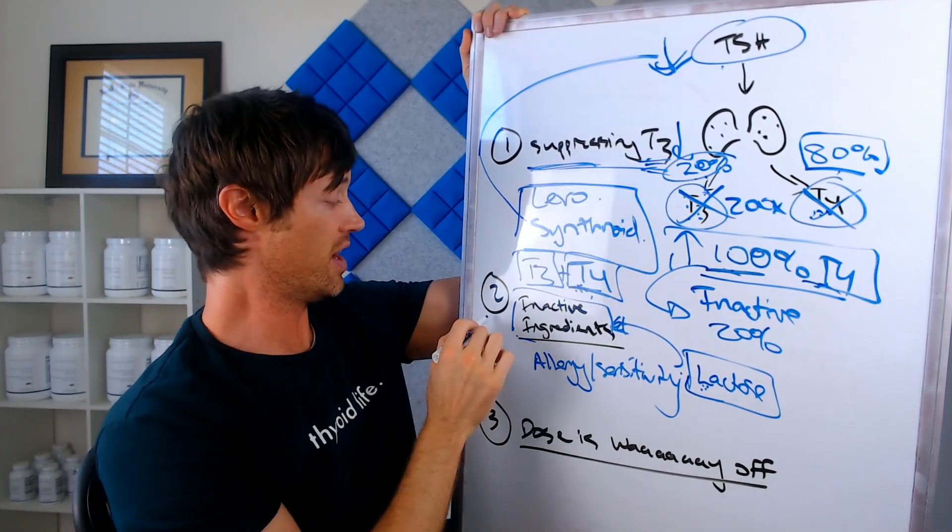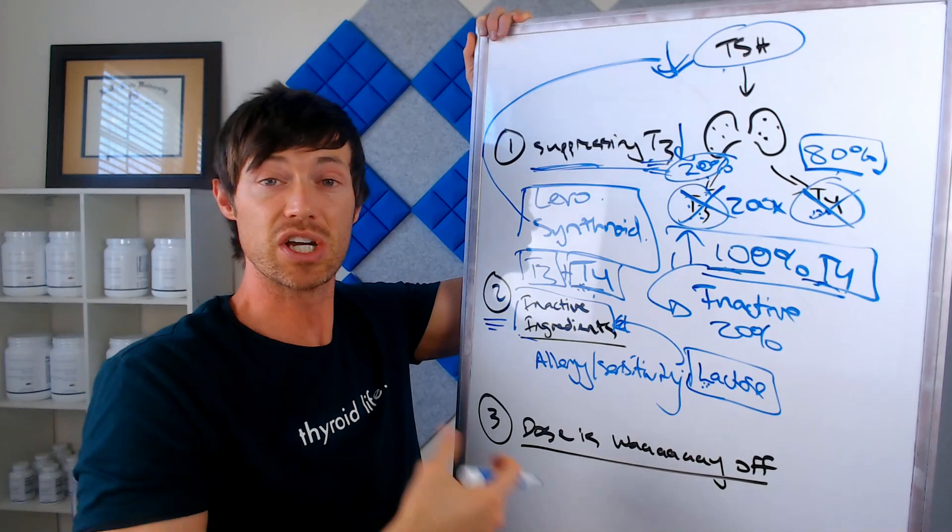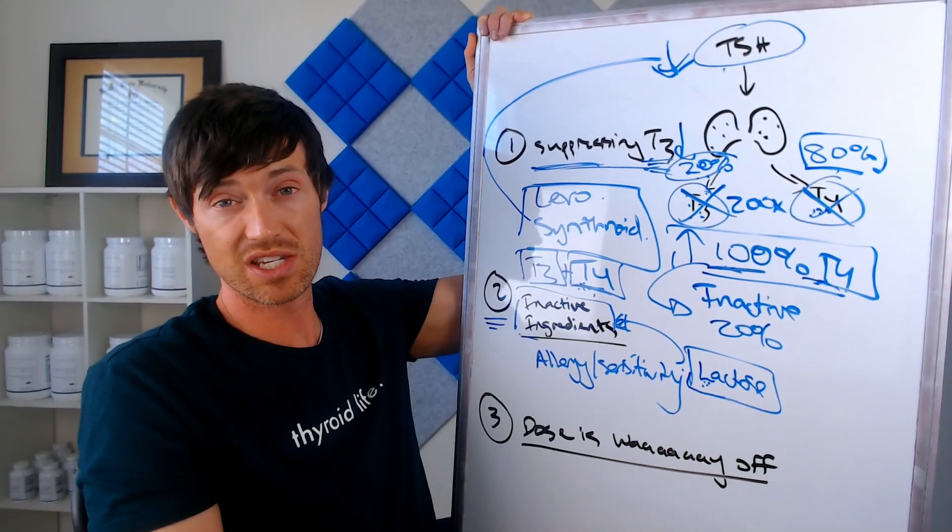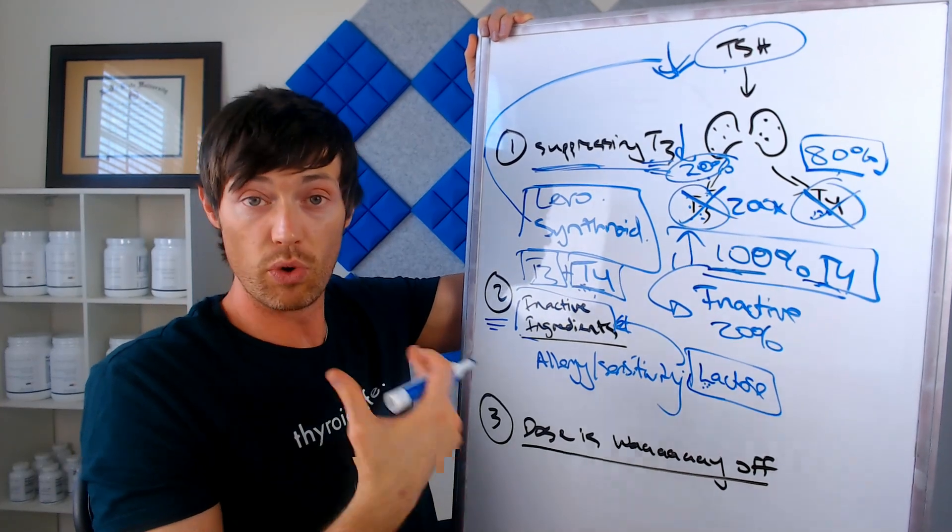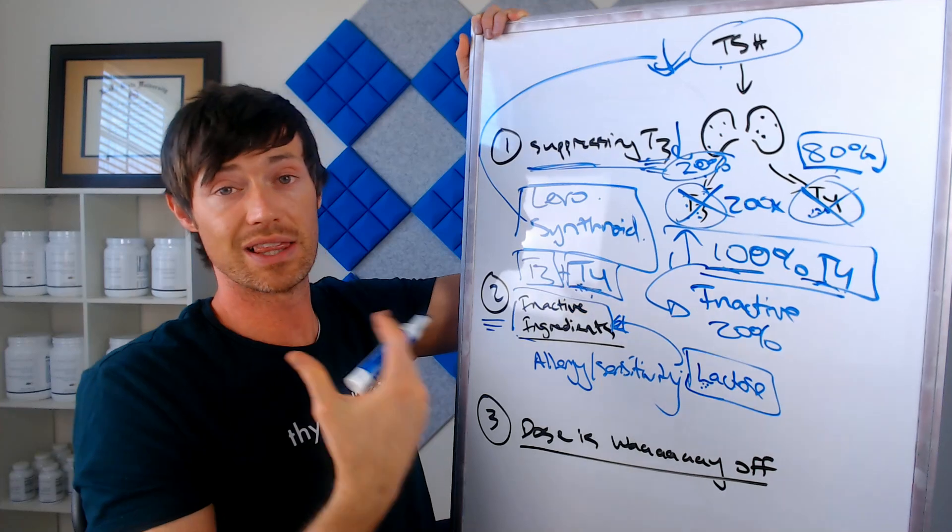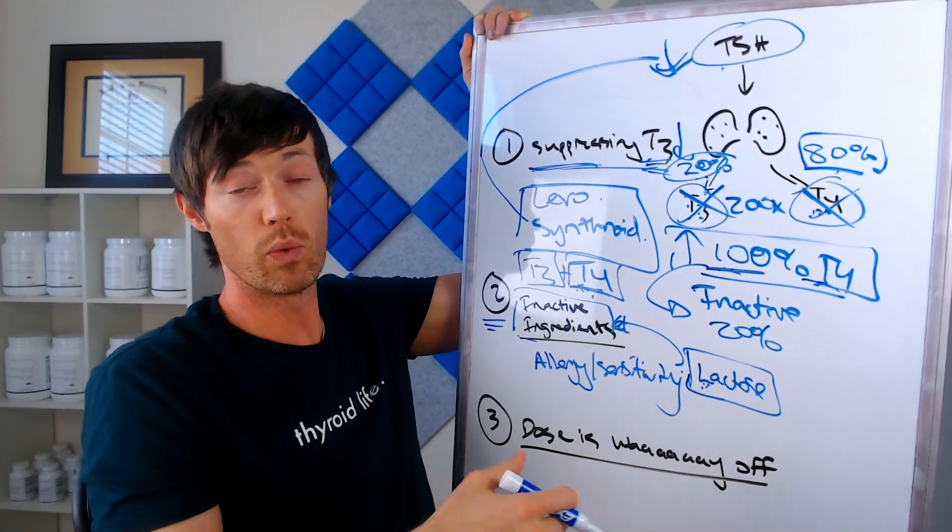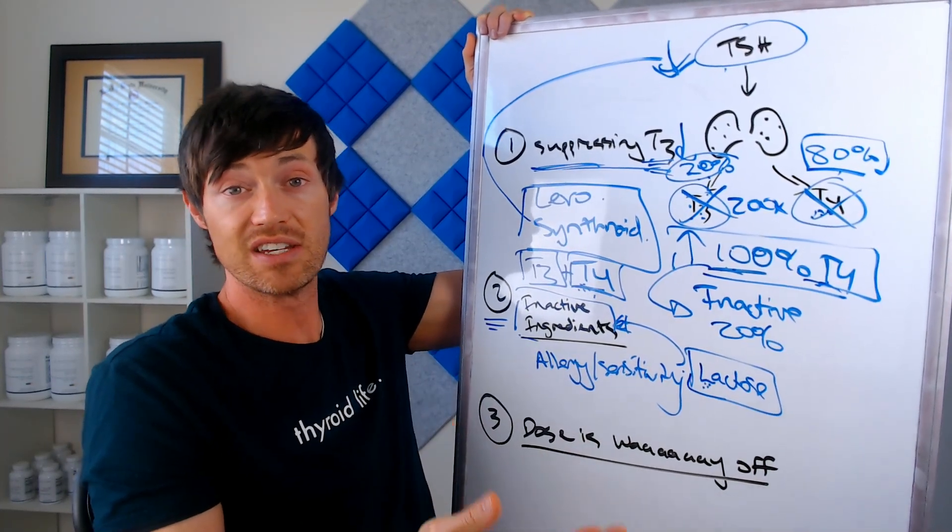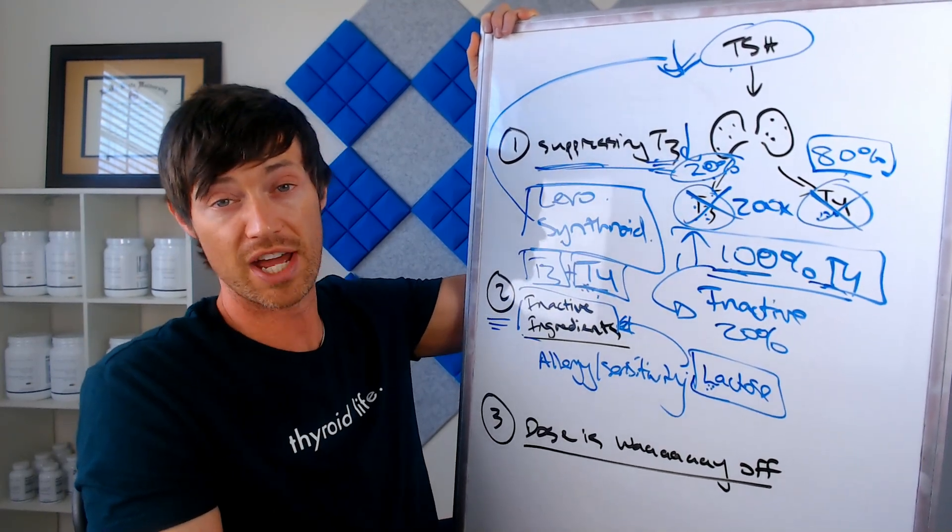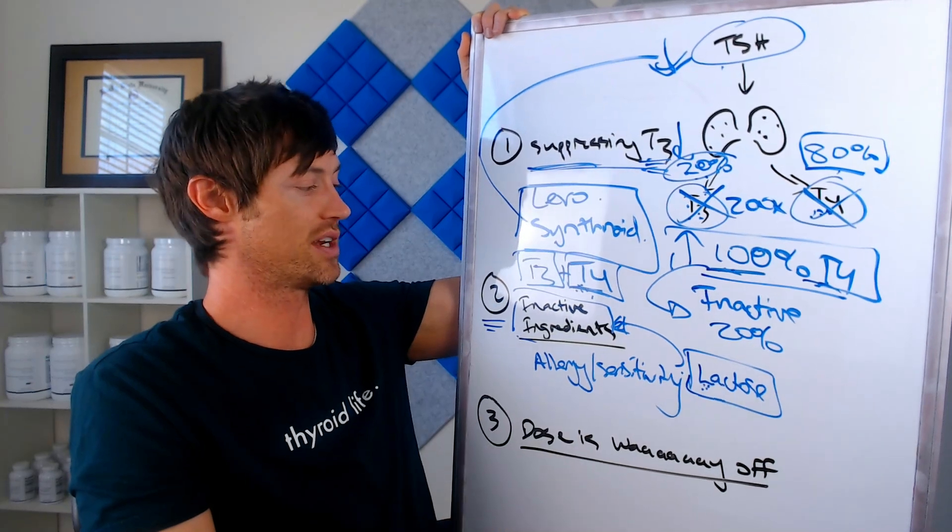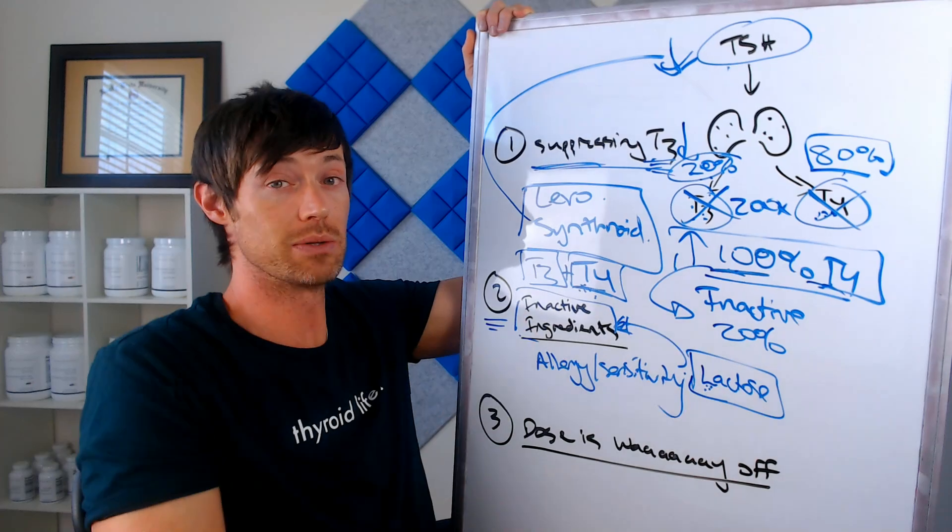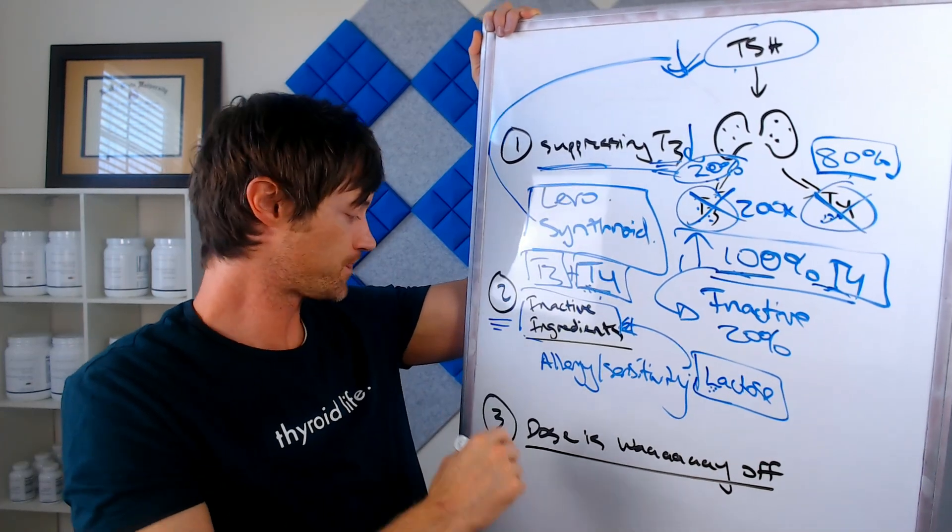If you're experiencing problem number two, the solution is to go and get a cleaner version of thyroid medication. There are lots of cleaner versions of thyroid medications that exist right now that are devoid of these binders and fillers and dyes that you can just switch to. So if you're not responding very well to levothyroxine, try switching to Tirosint. If you're not responding very well to another type of brand of NDT, let's say Armour Thyroid, try switching to a different one or try switching to a compounded version of natural desiccated thyroid. That's number two.